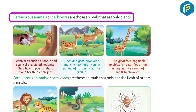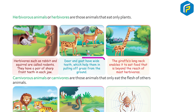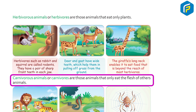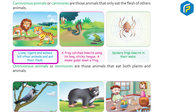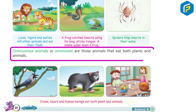Herbivores are animals that eat only plants. Herbivores such as rabbit and squirrel are called rodents and have a pair of sharp front teeth in each jaw. Deer and goat have wide teeth which help them in pulling grass from the ground. The giraffe's long neck enables it to eat food beyond the reach of most herbivores. Carnivores are animals that only eat the flesh of other animals — lions, tigers, and wolves hunt and eat other animals. A frog catches insects using its long sticky tongue, and a snake gulps down a frog. Spiders trap insects in their webs. Omnivores are animals that eat both plants and animals.